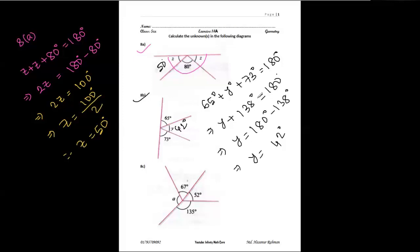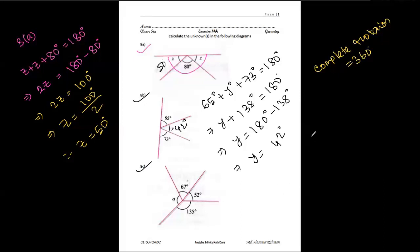In this way we can easily solve 8a and 8b. Now for 8c — if we look at this figure, we know that these 4 angles will make a complete rotation, which is 360 degrees. So from 8c, we can write: a plus 67 degrees plus 52 degrees plus 135 degrees will make 360 degrees.